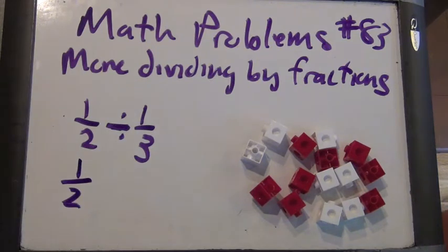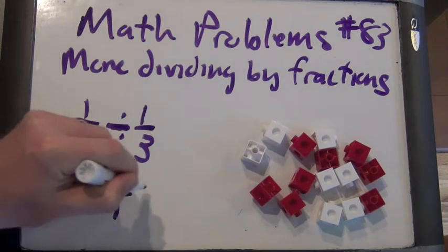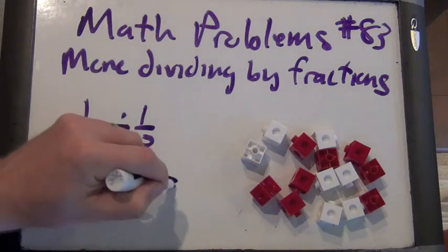So this would be the same thing as 1 half over 3 over 1. We're going to have to multiply by times 3 over 1. Times 3 over 1, which equals 3 halves. Very good.